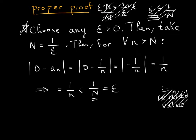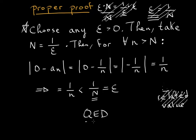So my stars indicate where your proof starts. Choose any epsilon greater than zero, then take big N to be 1 over epsilon, then for any little n greater than big N, go through all the work and make it less than epsilon. Once you get to this equals epsilon, you can put QED and you are done with your proof. I hope that this video was helpful to you.